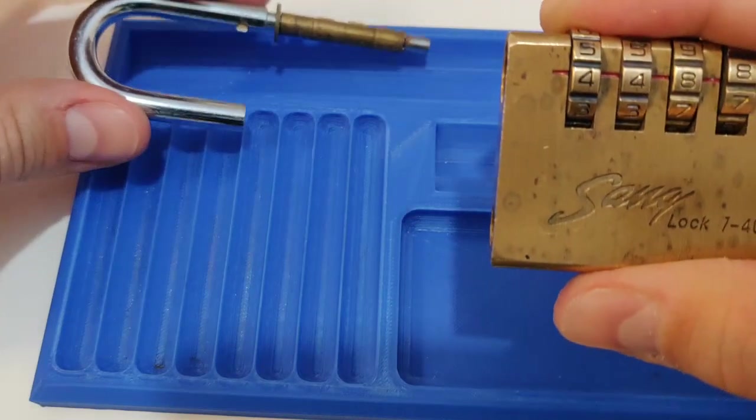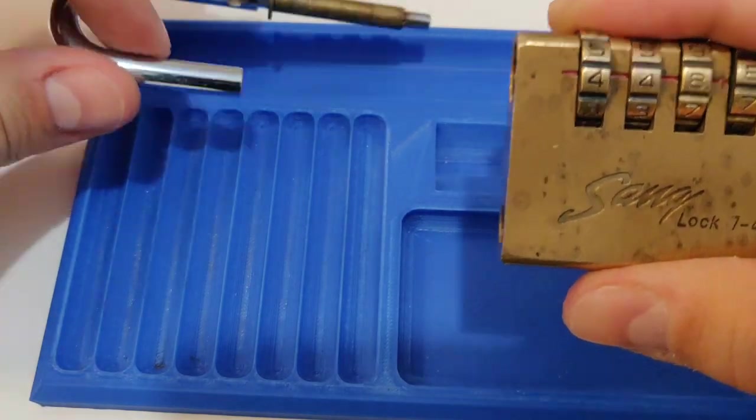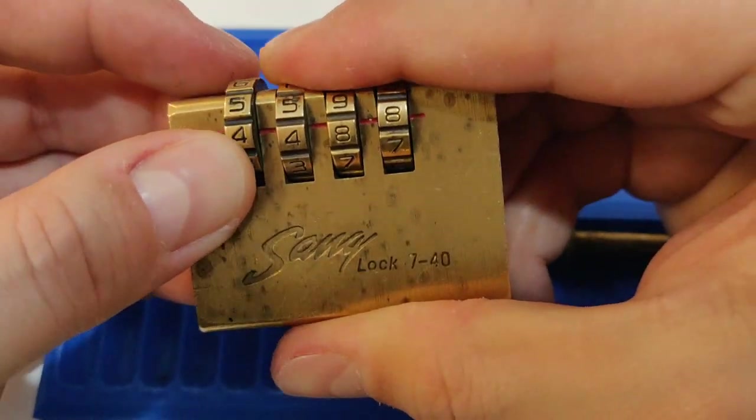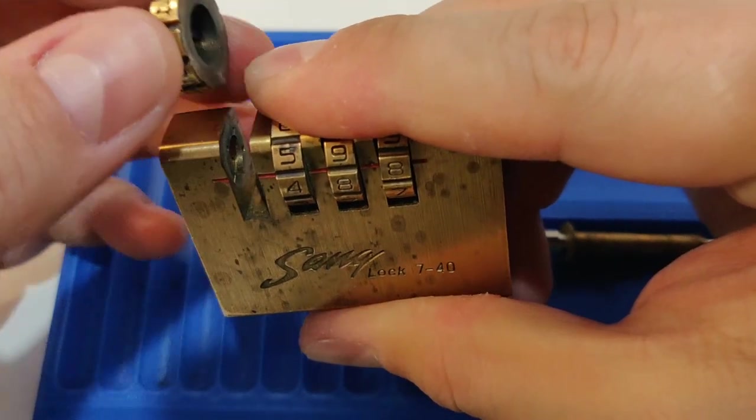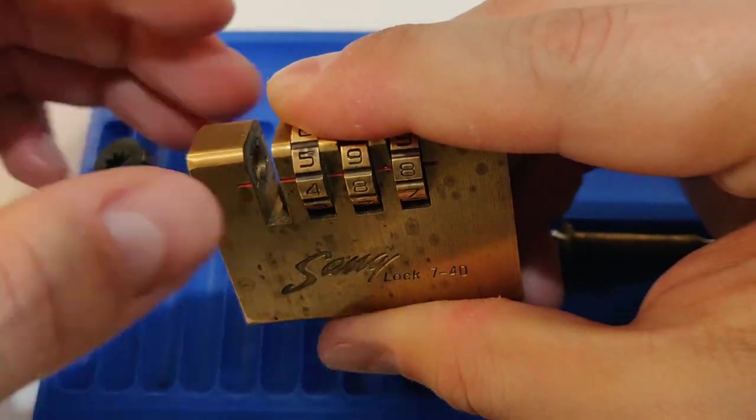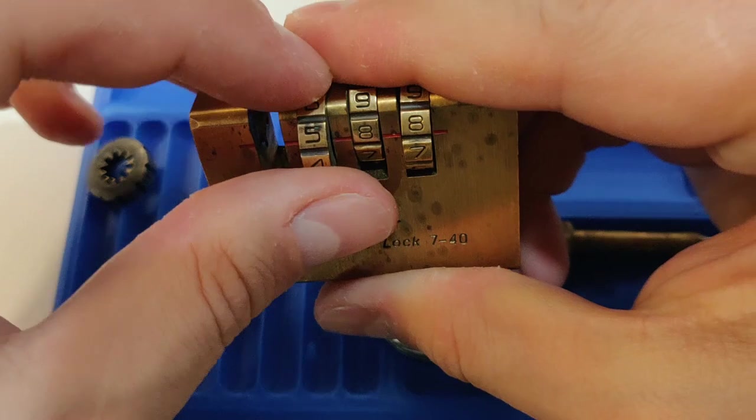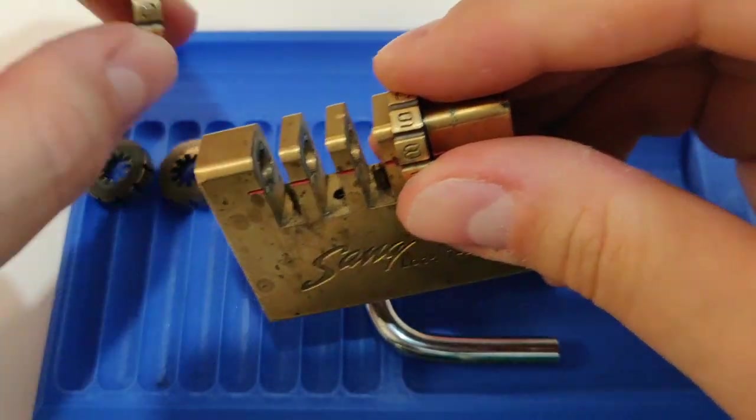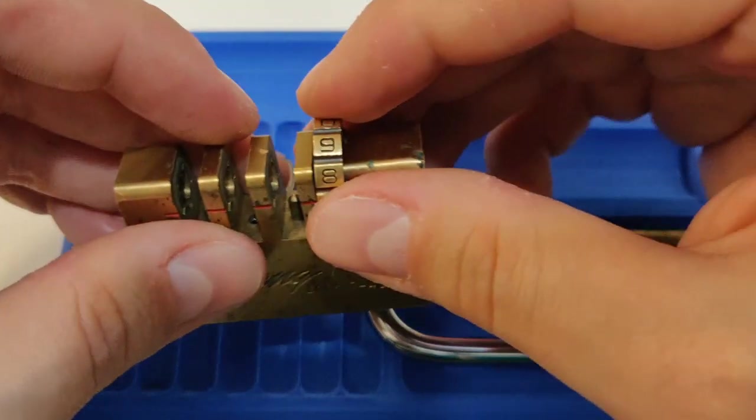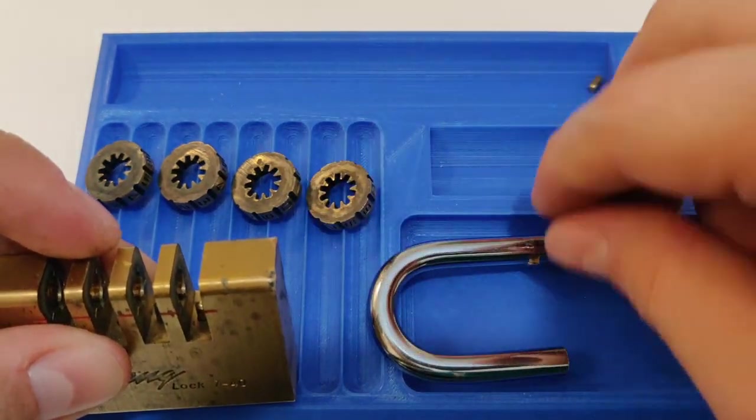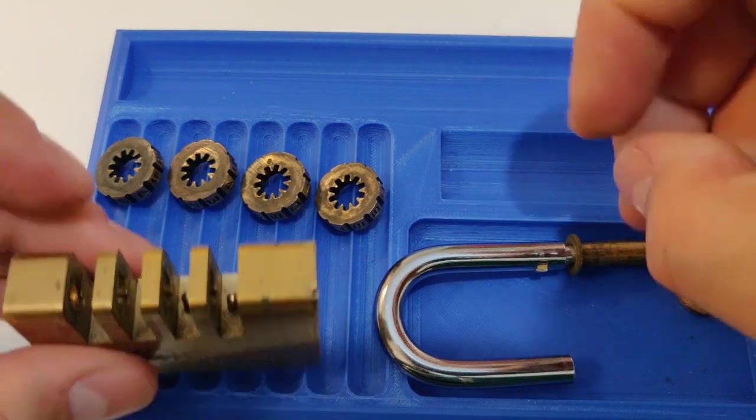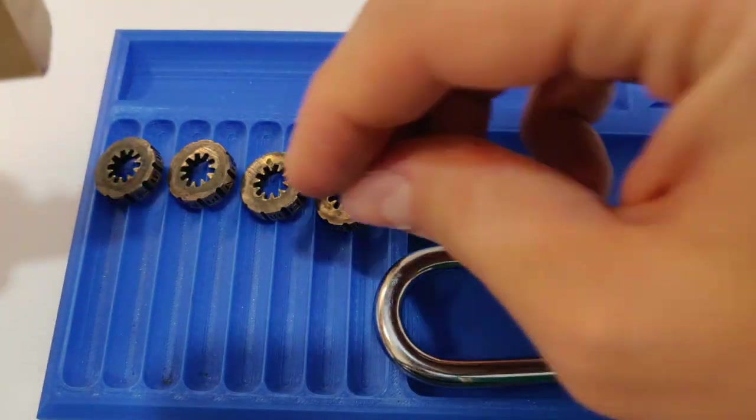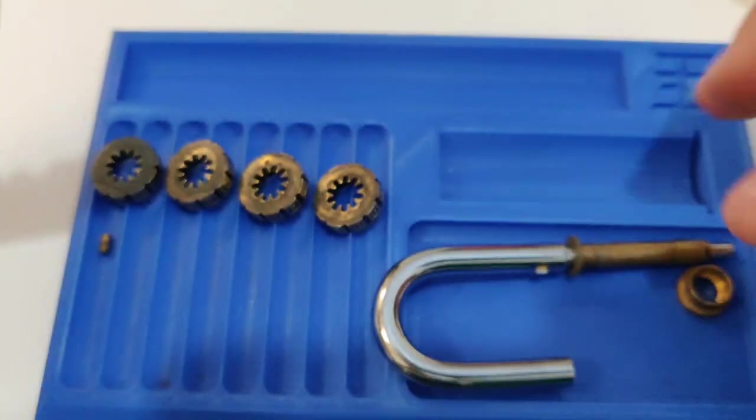4488, yeah. So now I think I can remove this part. Let me put it here and remove the wheels. This was the first wheel, the second one—I lost a pin, I think—the third one and the fourth one. Let me find the pin.